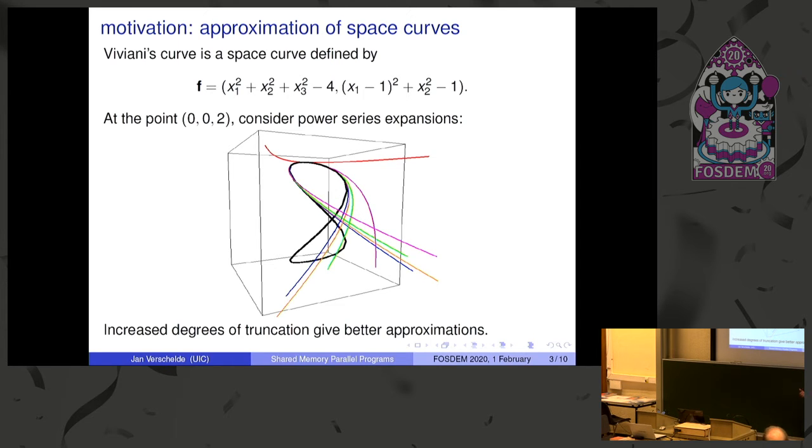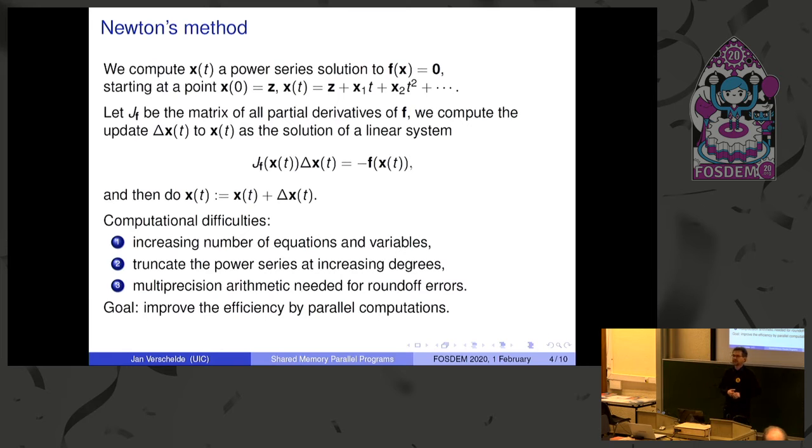You're going to compute power series expansions. The red one is the trivial one - if you only do one term, you think it's kind of a parabola. But if you take more and more terms in that power series expansion, already the next one is very interesting. You see the crossing point. As you take more terms in your power series, this actually starts to approximate the real crossing point. This is where interesting things happen. The point of the talk is to compute this efficiently.